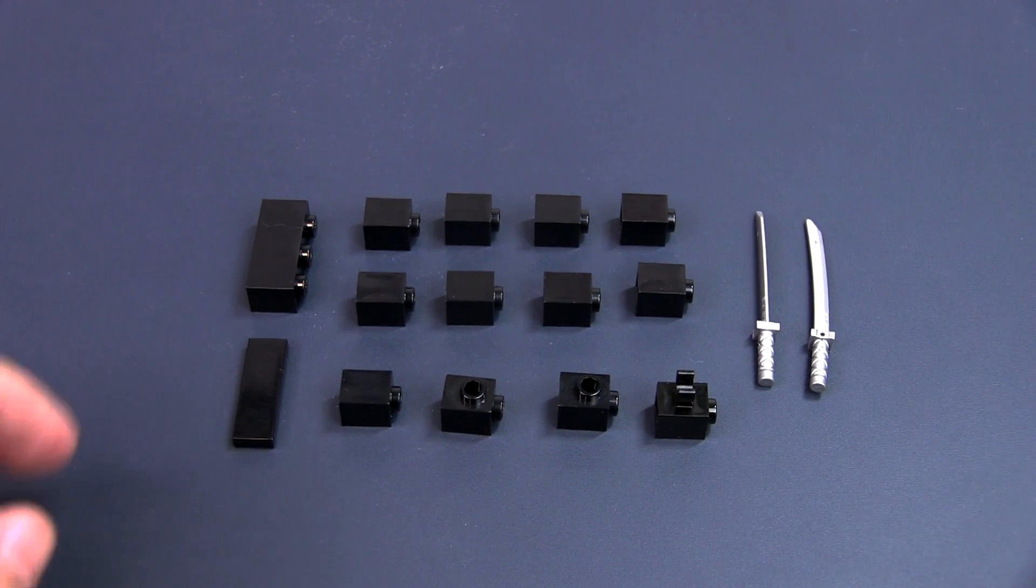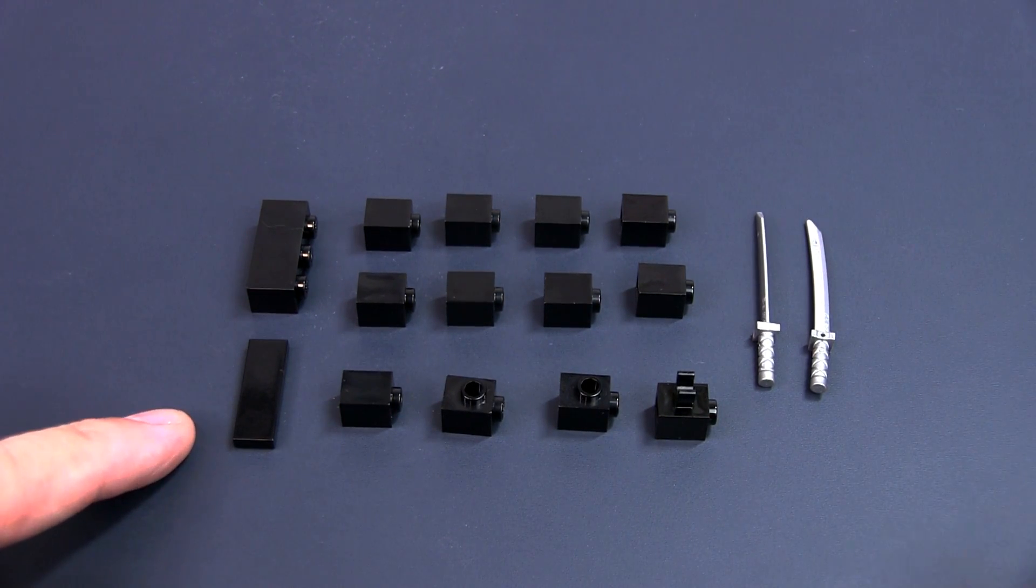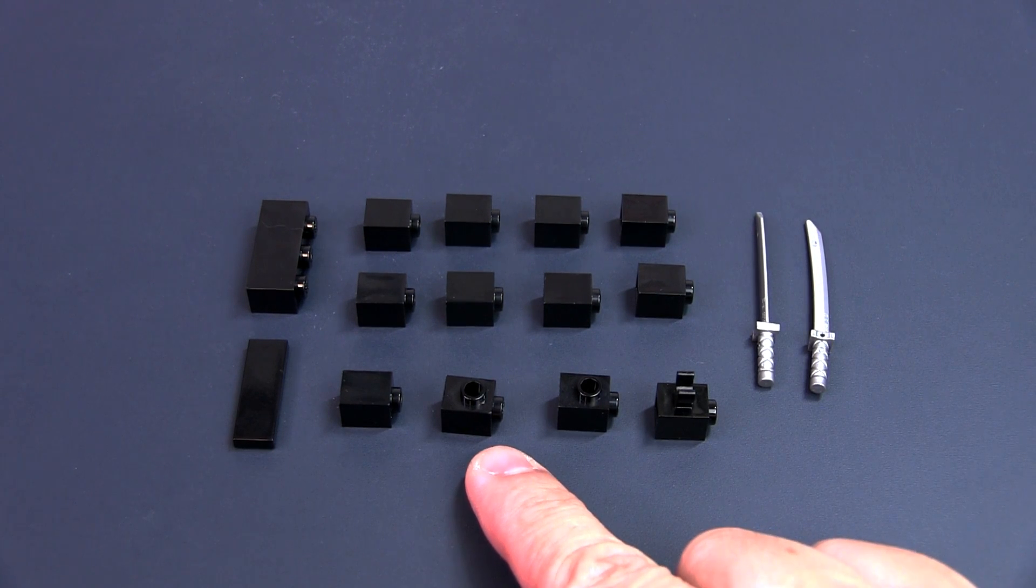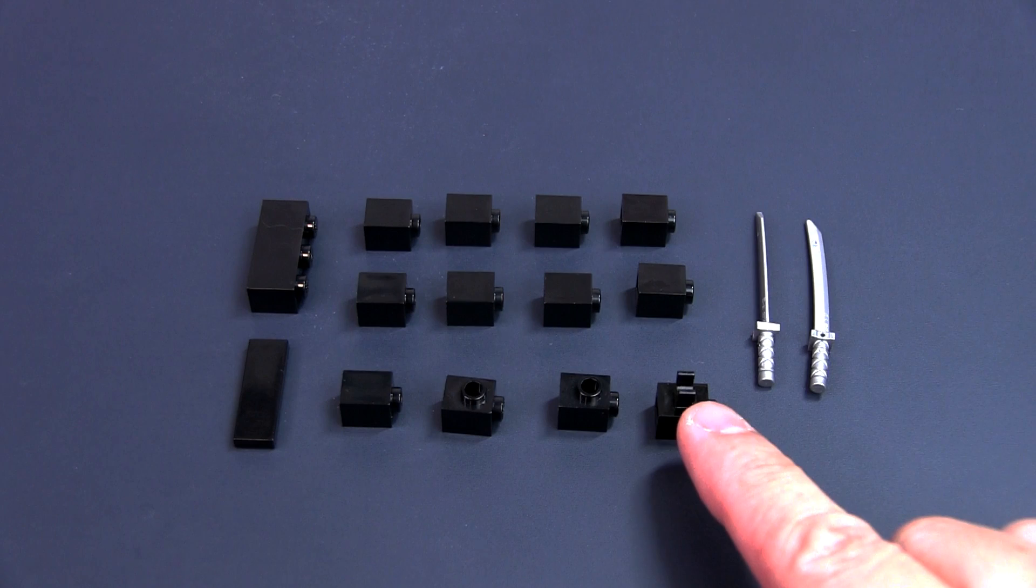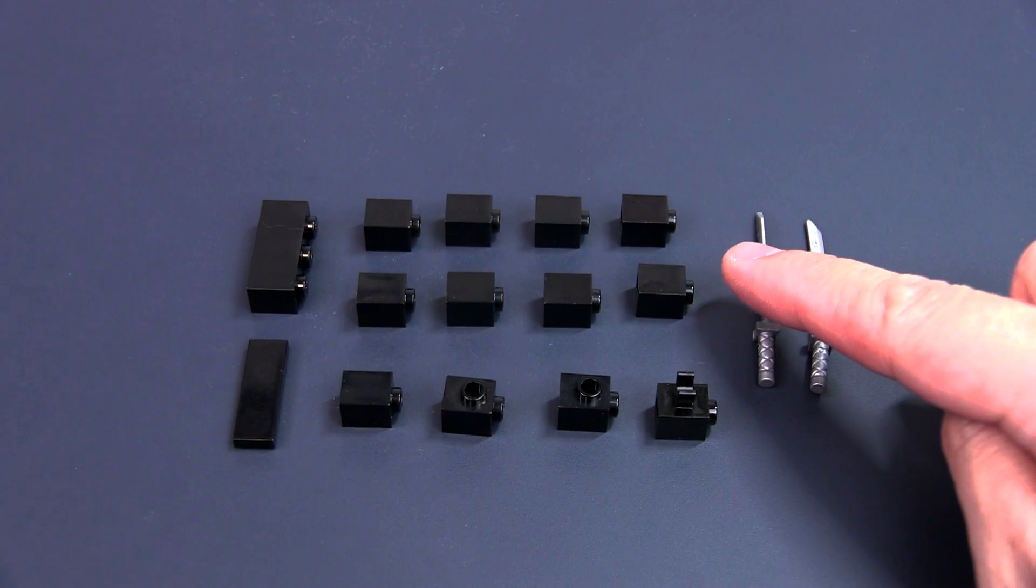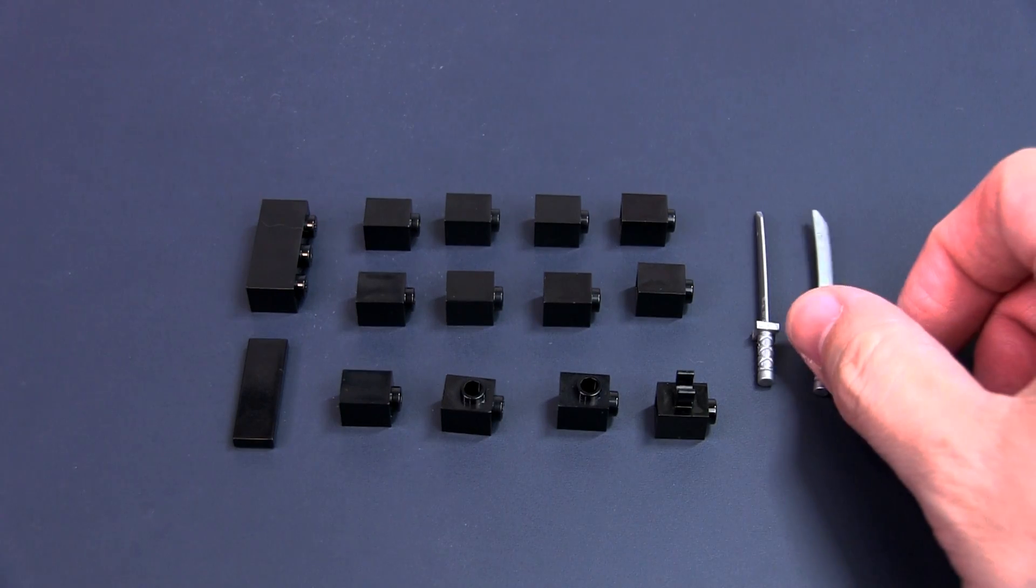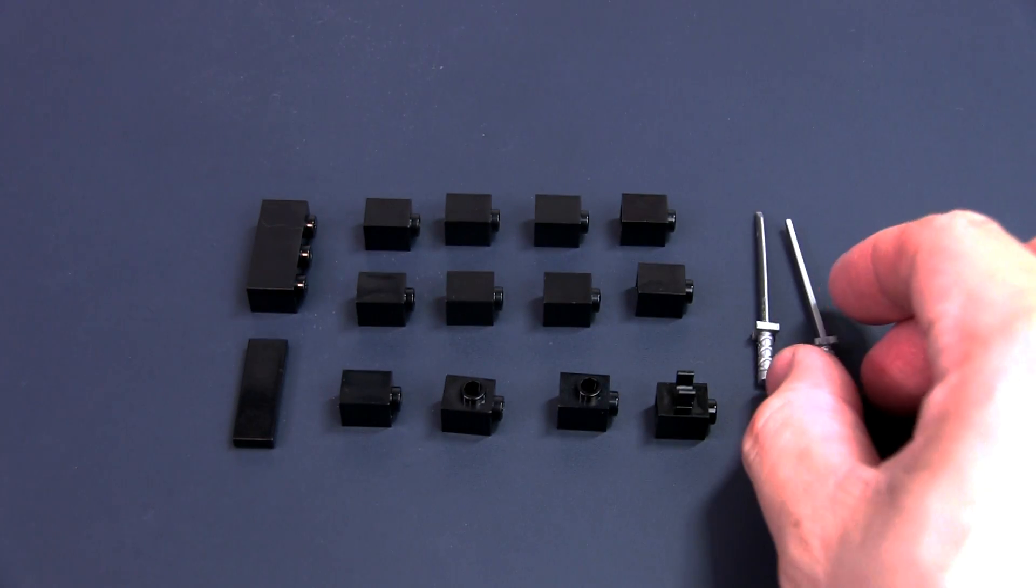You need a 1x3 black brick, a 1x3 black tile, two 1x1 modified bricks with studs on top and studs on the side, one modified brick with a clip on the side, and nine regular 1x1 black bricks. You also need two Lego minifig accessory swords and these come with the Ninjago sets.